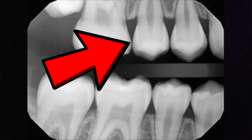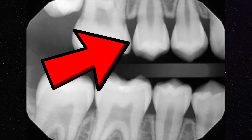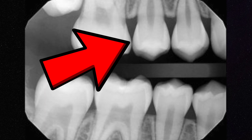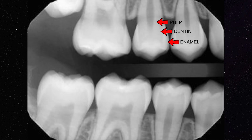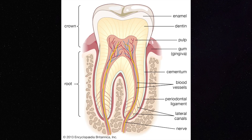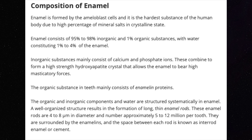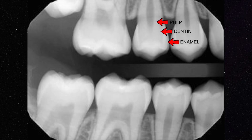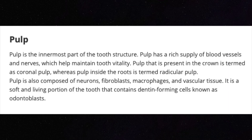Let's start with a healthy tooth. This image represents a bitewing — an x-ray that allows us to detect whether you have a cavity. If you look at this image, you'll notice three prominent layers. The outermost layer is the enamel, made of inorganic materials called hydroxyapatite crystals. It's very strong and dense, which is why it looks more white than the second layer, the dentin. In the middle is the pulp chamber, which stores blood vessels and nerves that keep the tooth alive.